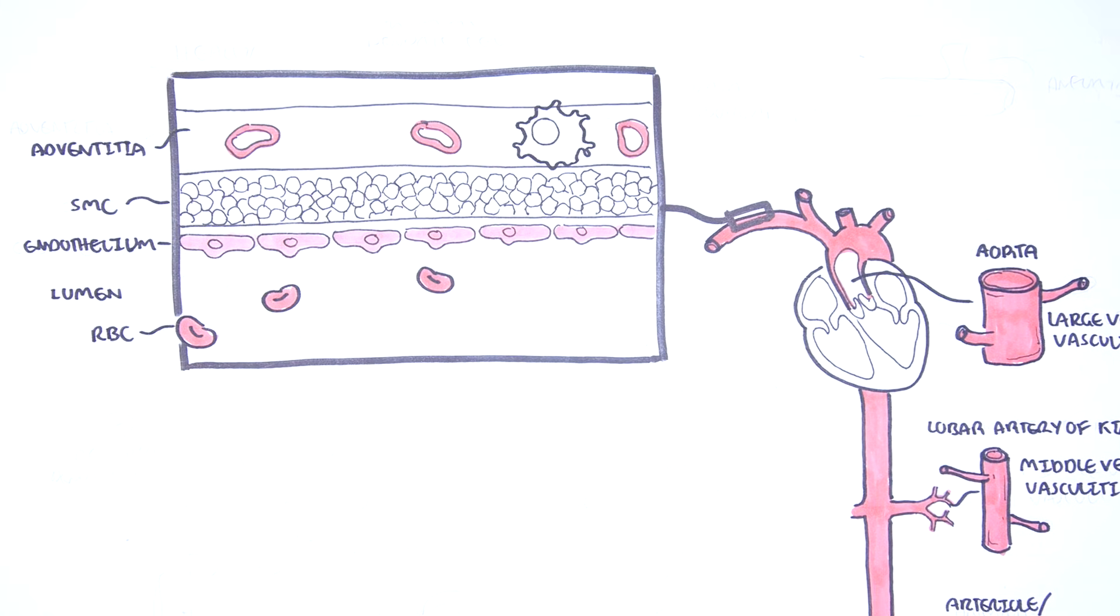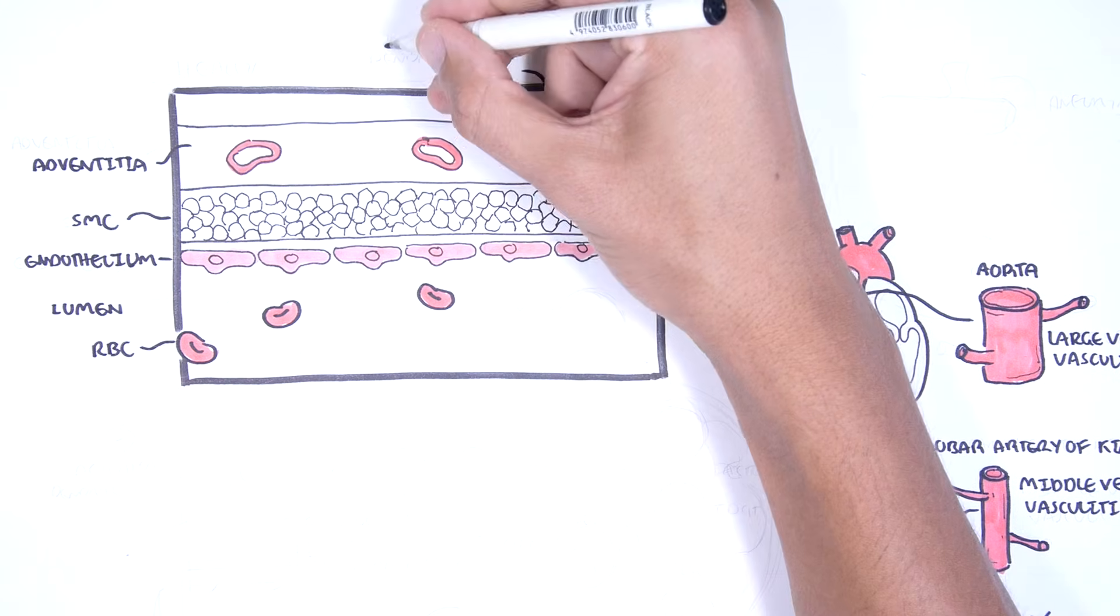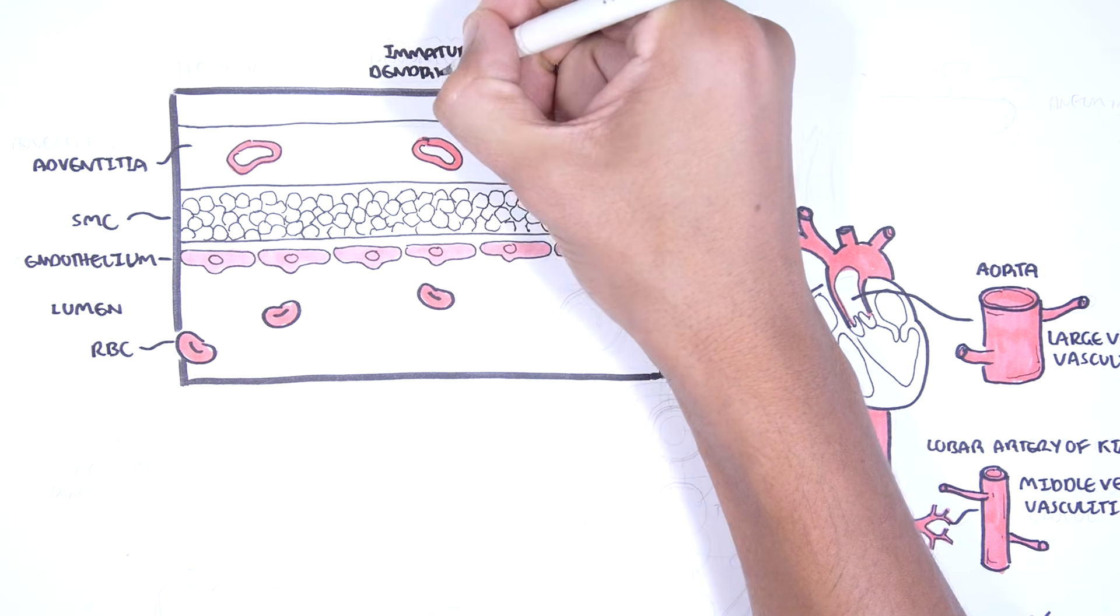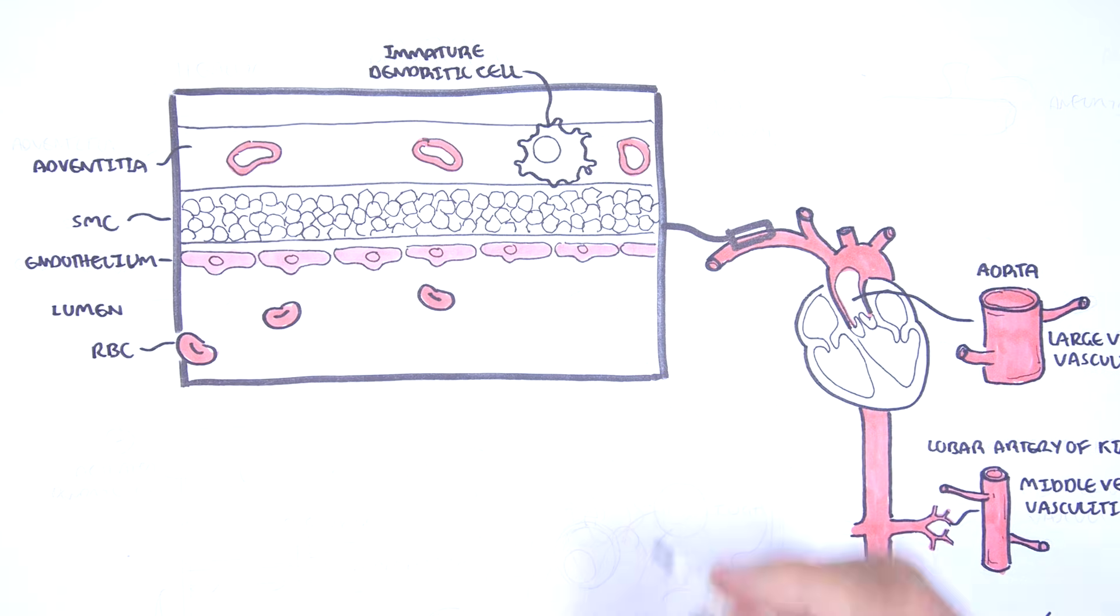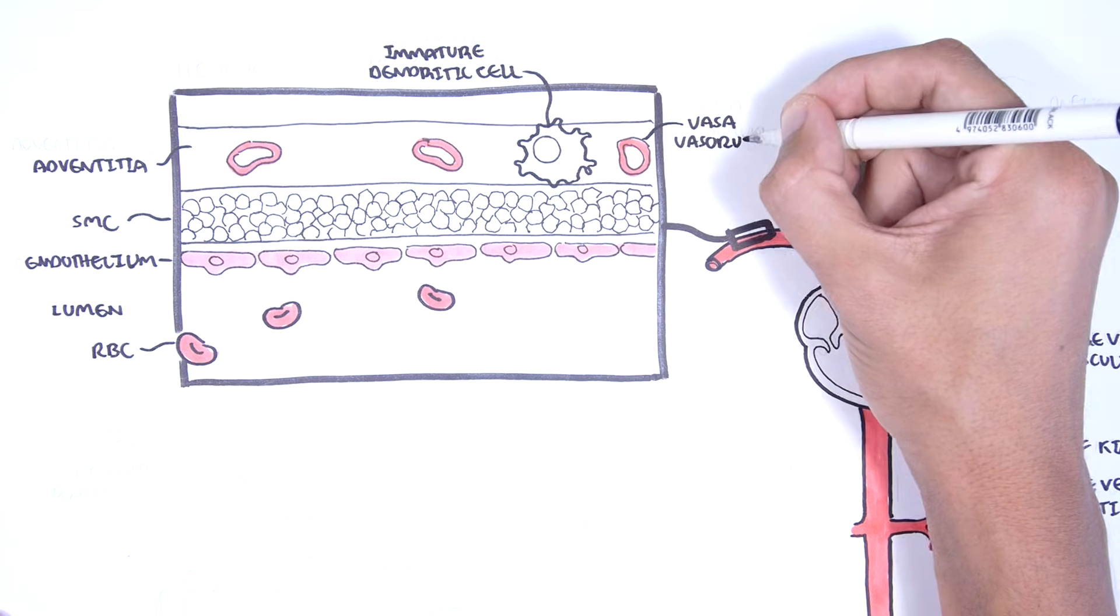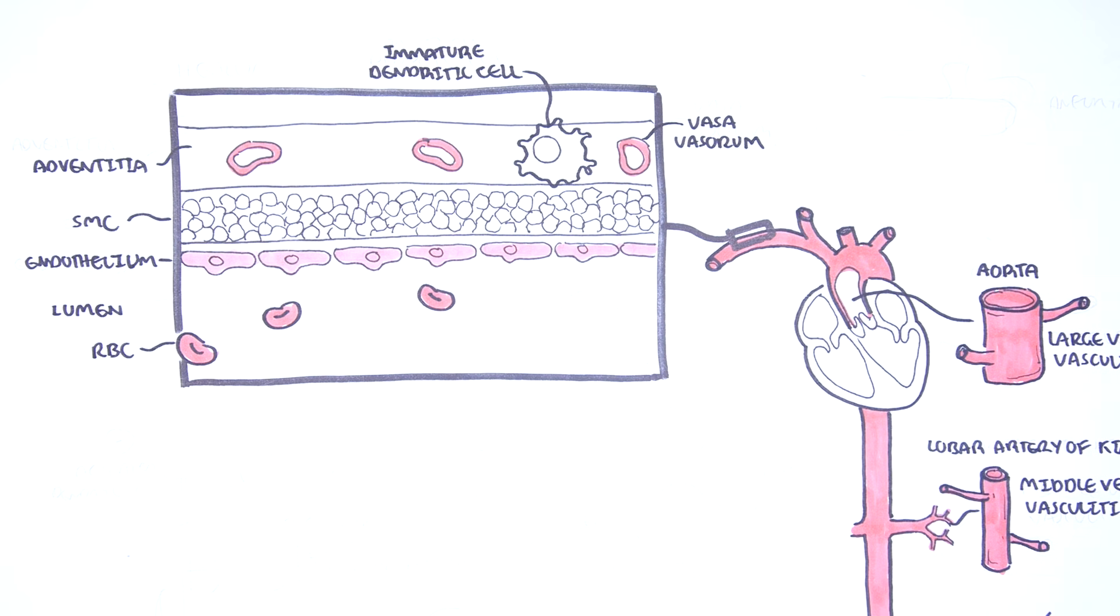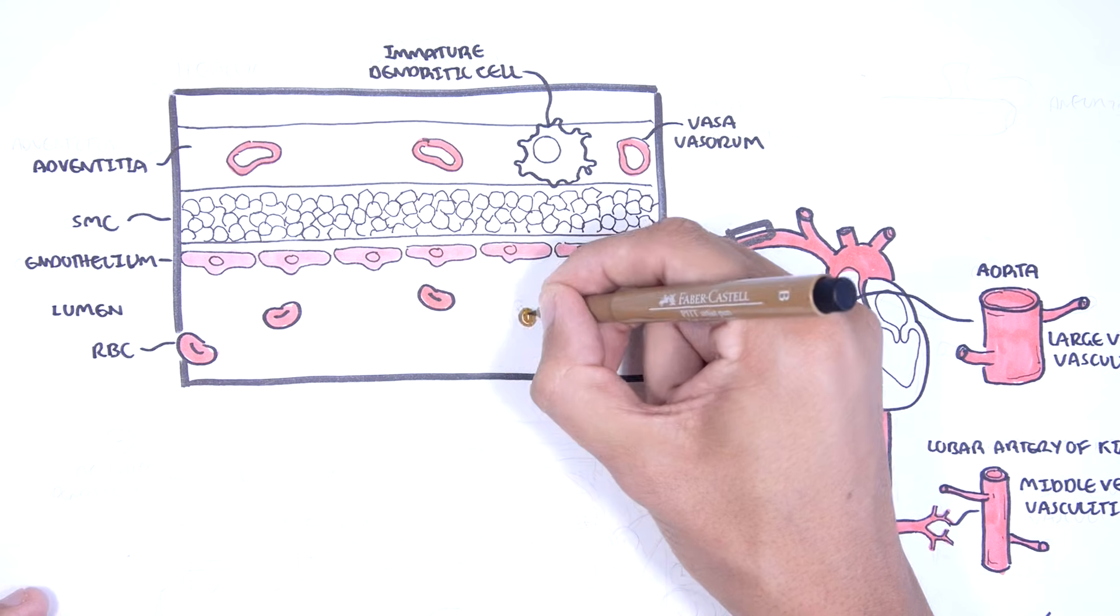Within the adventitia, you can find immature dendritic cells which are antigen presenting cells waiting to mount an immune response. White blood cells including monocytes which are also antigen presenting cells circulate the vessels and are ready to mount an immune response.